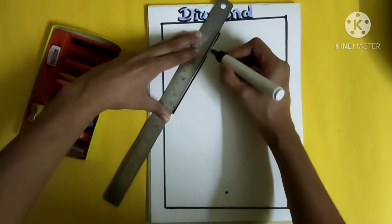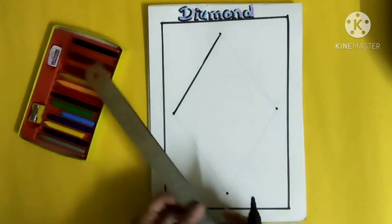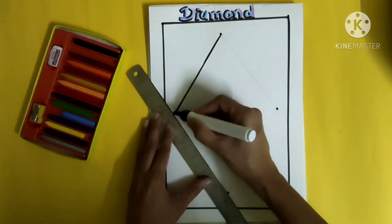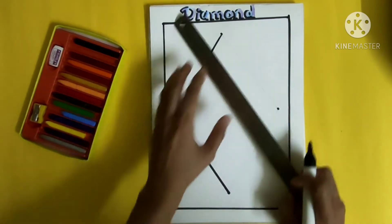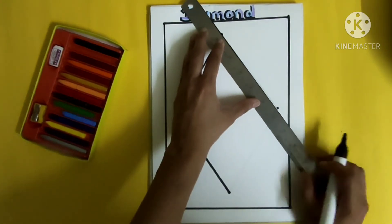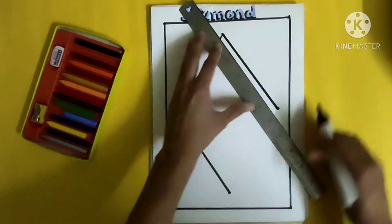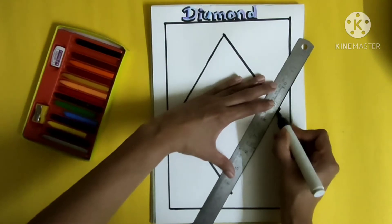And then join the dots properly with the help of a scale and black crayon or black sketch pen. Join all four dots and draw properly slanting lines, and our diamond shape is ready.